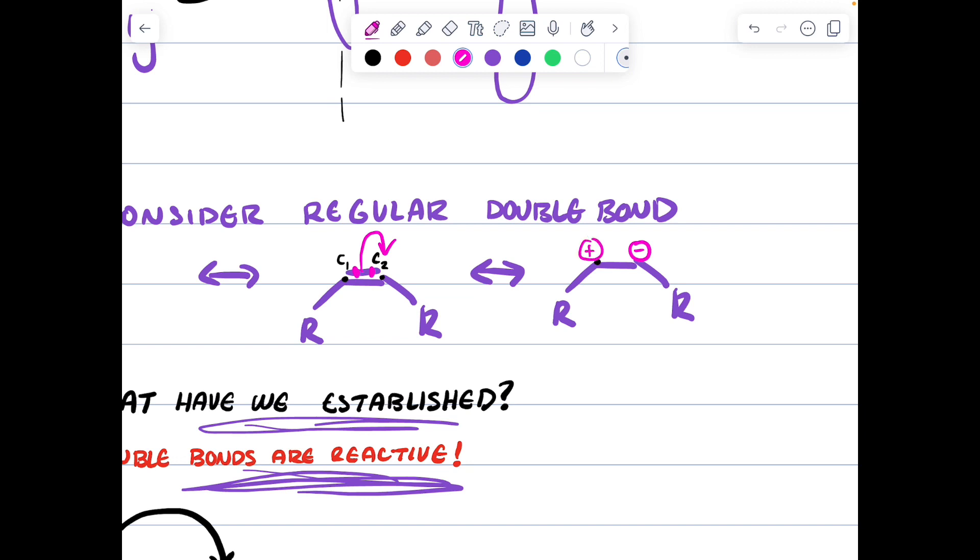Well, carbon two gains two electrons, it becomes minus. That means carbon one, well, it loses an electron because it initially was contributing one electron to that pi bond, but now that electron is on carbon number two. So it becomes positive, lose electrons, become cationic, gain electrons, become negative.